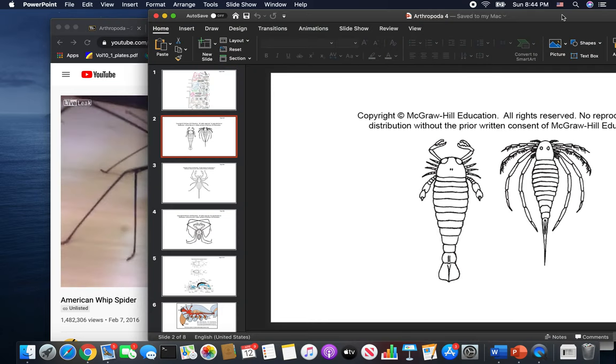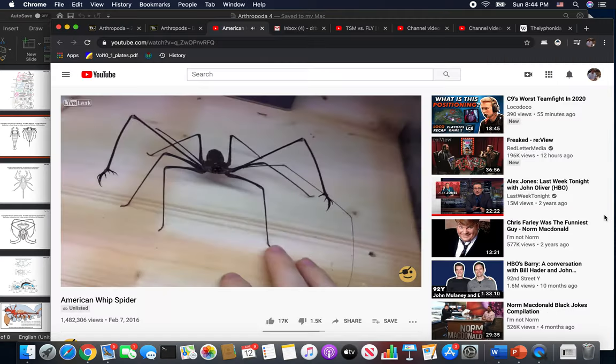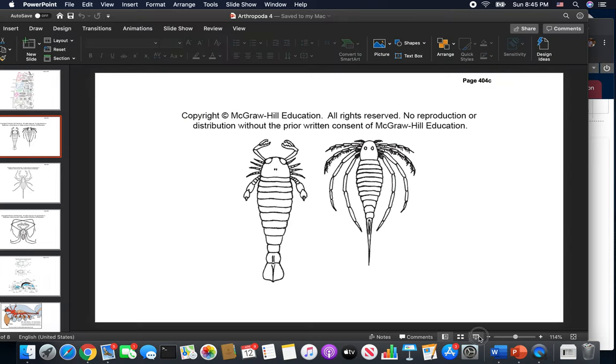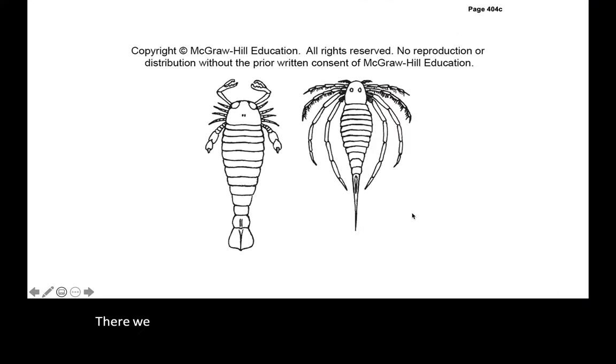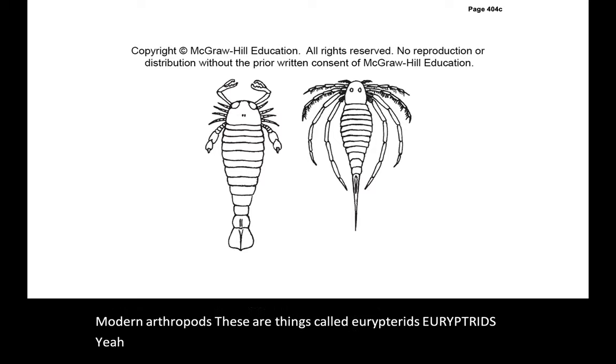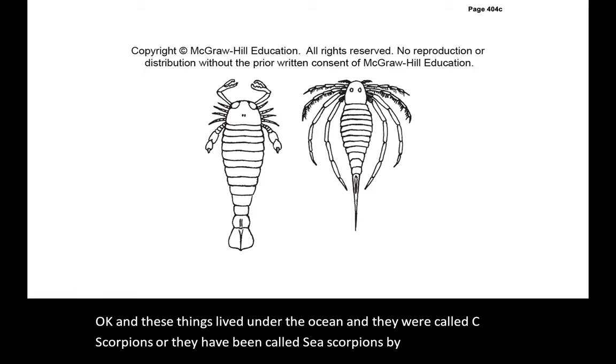Let's turn on the captioning. So these are some very primitive relatives of modern arthropods. These are things called eurypterids, E-U-R-Y-P-T-E-R-I-D-S. These things lived under the ocean and they were called sea scorpions or they have been called sea scorpions by people who find the fossils of them.